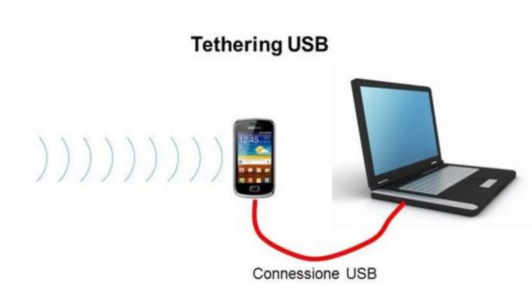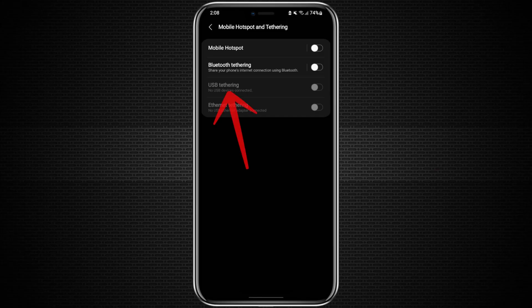You can also use USB tethering for a more stable connection. Simply connect your phone to the PC with a cable, turn on USB tethering in your phone settings, and your VPN-protected internet will be shared directly.